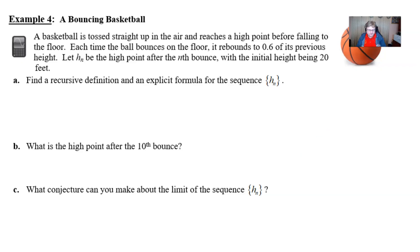So in this question, it says that we have a basketball that is going to be tossed straight up into the air and it will reach a high point before it falls to the floor. Each time the ball bounces on the floor, it rebounds to 0.6 of its previous height. We're going to let H sub n be the high point after the nth bounce, with the initial height being 20 feet.